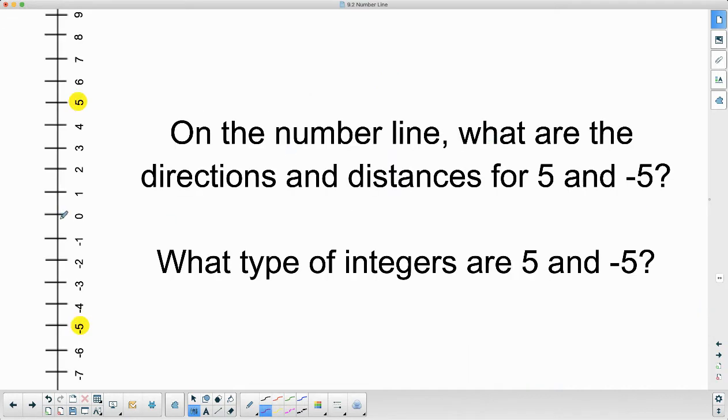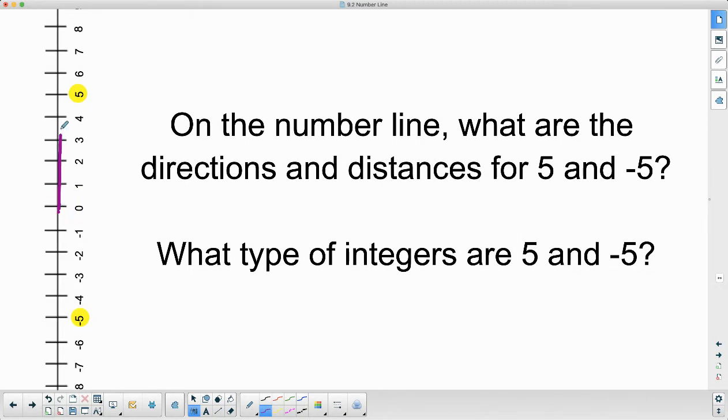This number line is going up and down vertically. So it's asking us what is the distance to get to five. So this goes five up. And if we need to get to negative five, we would have to go five down. And again, these integers are opposites because they're both five units away from zero.